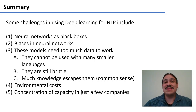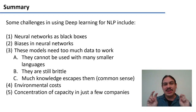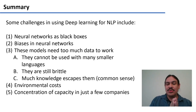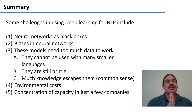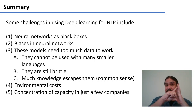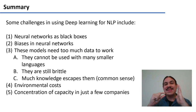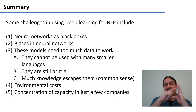Neural networks have been called black boxes because it's very difficult to understand what they're doing in order to go from input to output. Because they're so opaque, it's very difficult to detect biases that might be in them, and so our algorithms might continue to be biased.